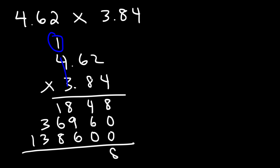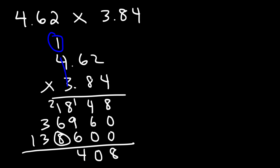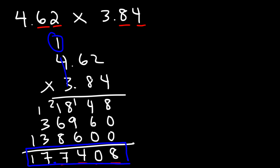Now let's add. This is 8. 4 plus 6 is 10 — carry over the 1. 1 and 8 is 9. 9 plus 9 is 18. 18 plus 6 is 24 — carry over the 2. 2 and 1 is 3. 3 and 6 is 9. 9 and 8 is 17 — carry over the 1. 1 plus 3 plus 3 is 7. Bring down the 1. Notice that we have a total of 4 digits to the right of the decimal point, so our final answer is 17.7408.